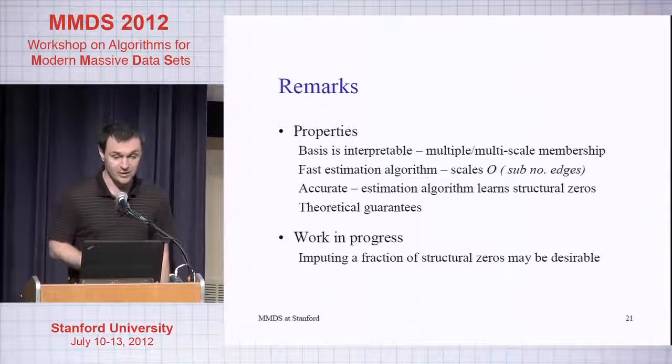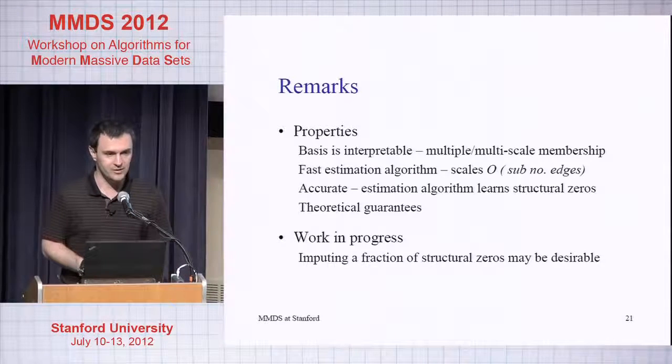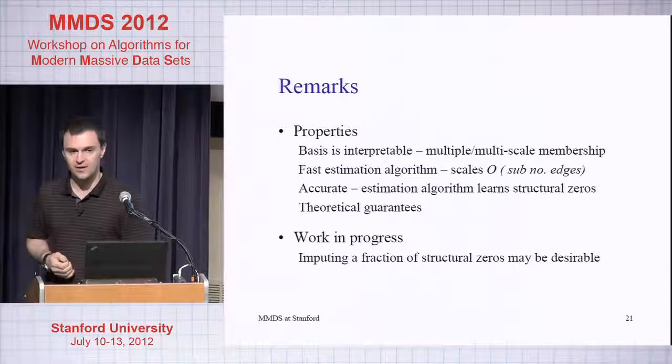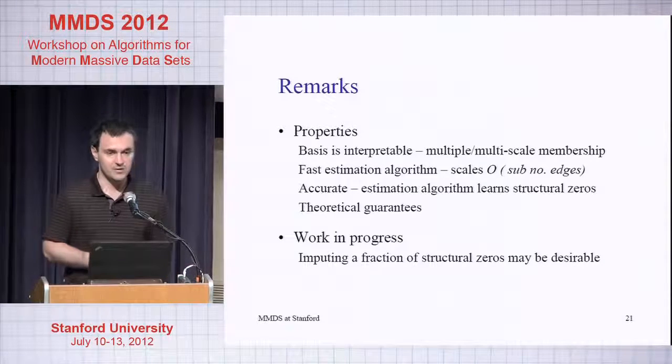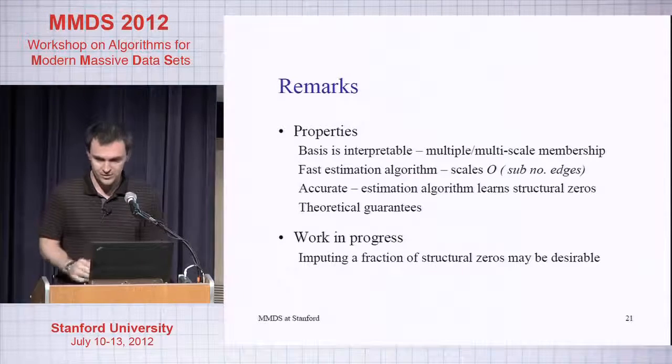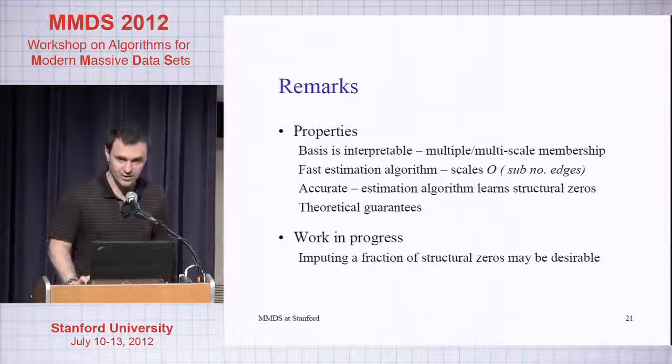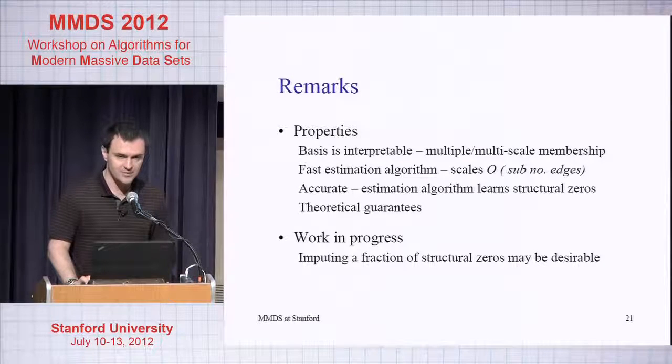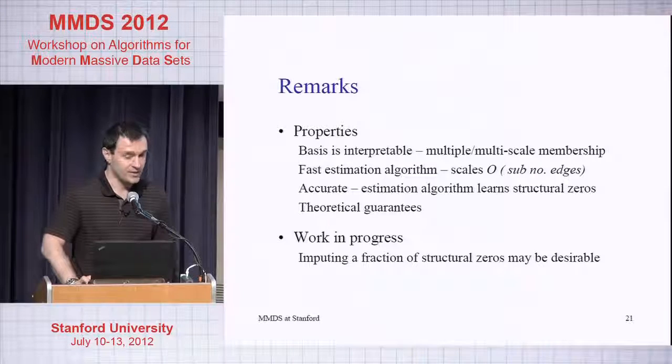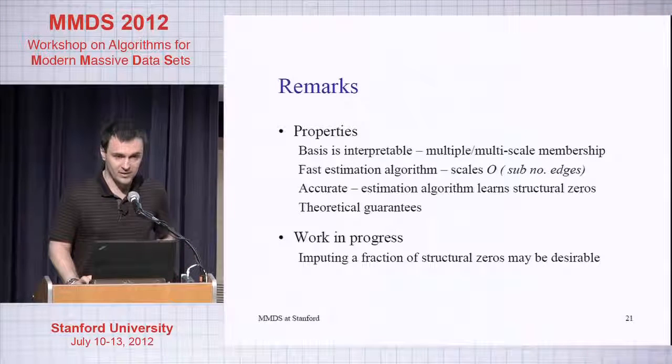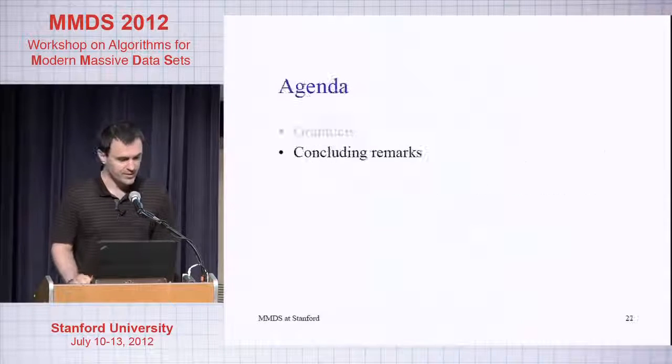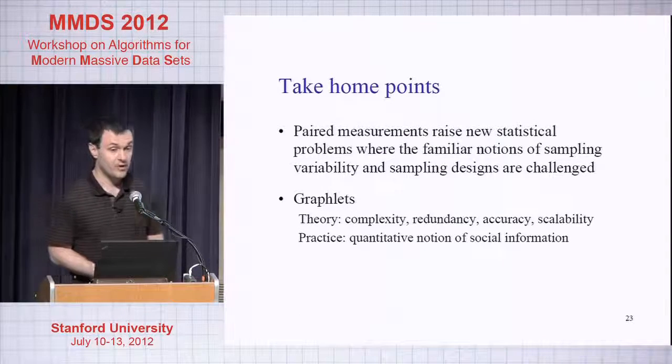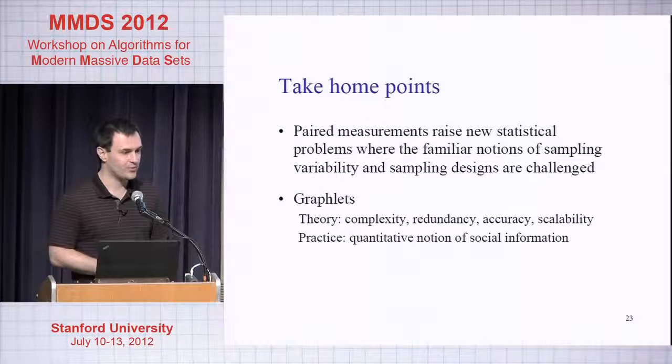Work in progress here. I told you before we are ignoring all the zeros. Now we are thinking of adapting Graphlets to a situation in which some of the zeros may be informative. The question is how do we do that, because a lot of the nice properties that this method has are tied to the fact that we are throwing away the zeros.